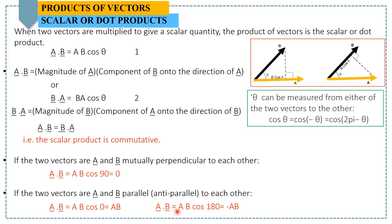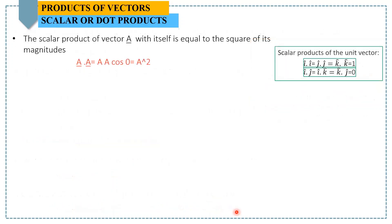If we take the scalar product of a vector with itself, we get the square of its magnitude: a dot a equals a times cosine of 0° equals a squared. Applying this to unit vectors: i dot i, j dot j, and k dot k each equal one. If we take the product of i with j, or i with k, or k with j, because of the 90-degree angle between them, we get zero.